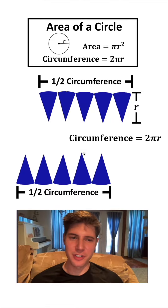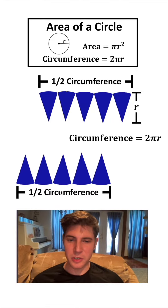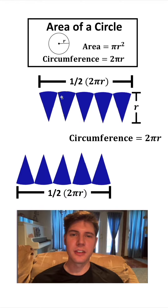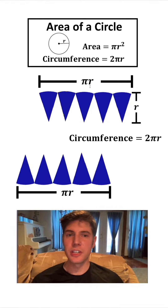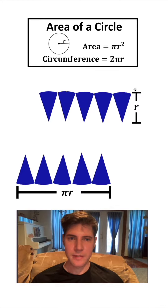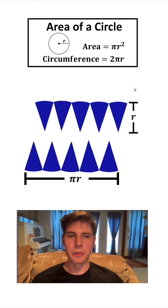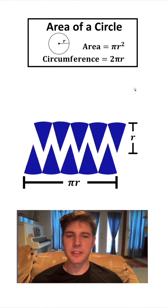And this up here would be the other half of the circumference. The formula for circumference is two pi R. So if we substitute two pi R into each of these, it says one half times two pi R. The one half and the two cancel, so each of these will just become pi R. Let's clean things up and start to bring our pieces together.